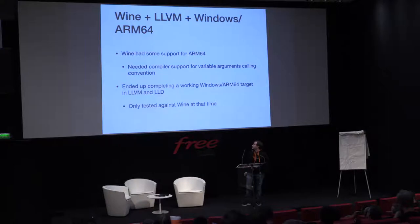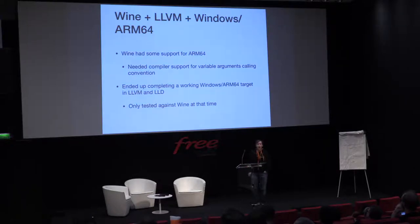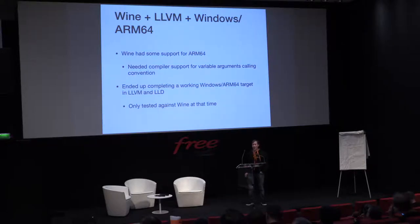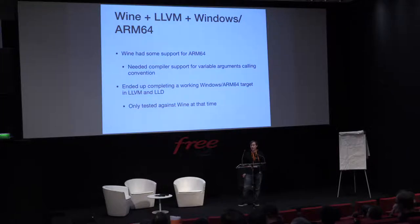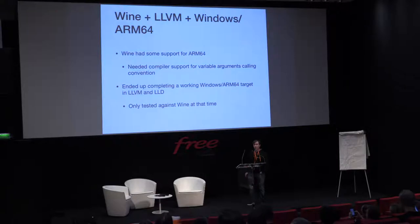We also did some work getting support for ARM64. Last year I added support for the upcoming Windows ARM64 platform in LLVM. It started out from Wine, which had some initial ARM64 support since a few years back — but that didn't really work for much since it lacked support for the variable argument calling convention. I started by complementing the compiler to add support for this calling convention, and in the end I ended up implementing the full target for compiling for this platform.